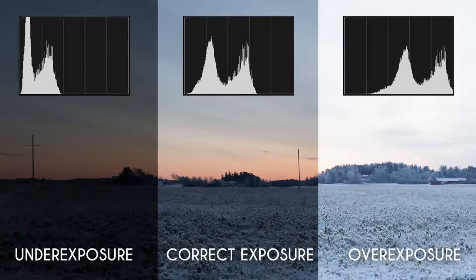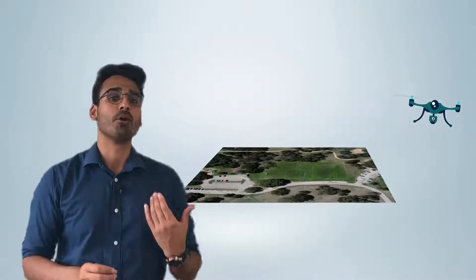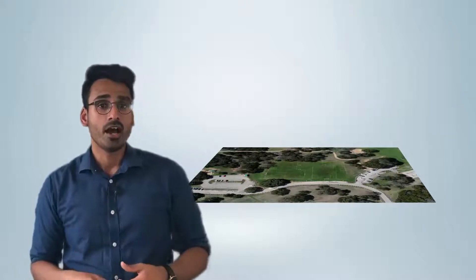But why do exposure settings matter? Well, as mentioned before, exposure settings control the total amount of light entering a drone's camera. This is important for drone flights as you do not want to overexpose or underexpose your images during flight. What's particularly important is that the camera should maintain a constant exposure throughout the duration of the flight, and that all the images maintain the same exposure level and can be easily analyzed during the post-processing stage.